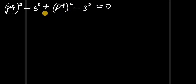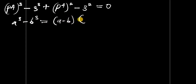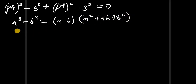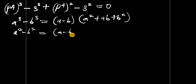Now let's make use of these identities. If we have a^3 minus b^3, it equals a minus b, times a squared plus ab plus b squared. And also the identity a squared minus b squared equals a minus b times a plus b.